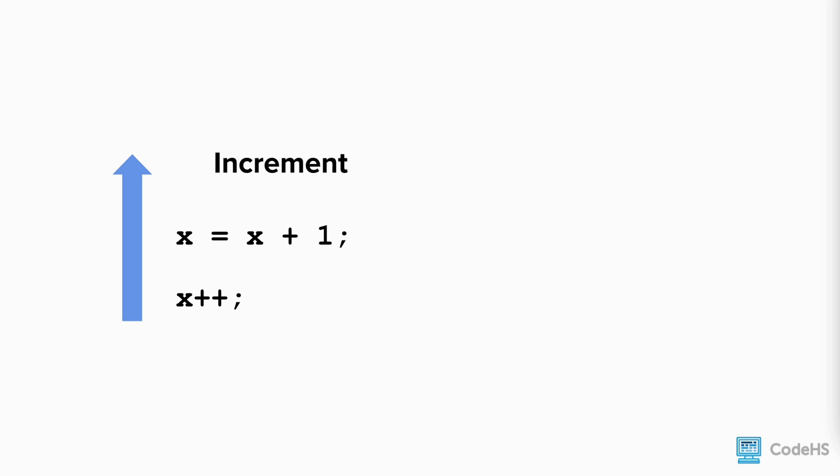To increment means to increase the value of the variable by 1. To do this, we reassign the variable to itself and add 1. The shorthand version of this is to write the name of the variable and follow it by 2 plus signs.